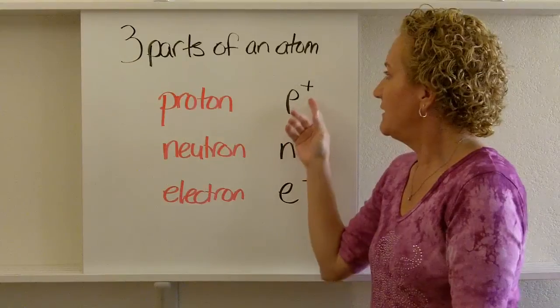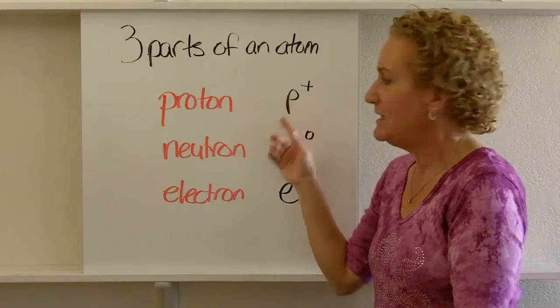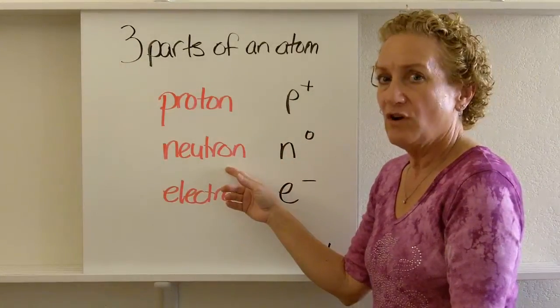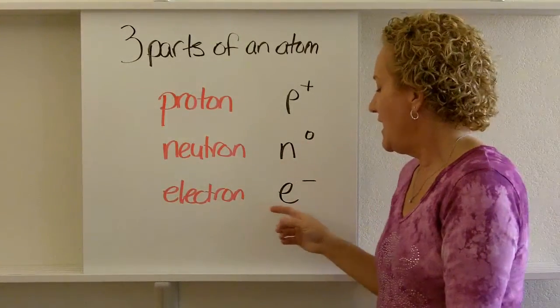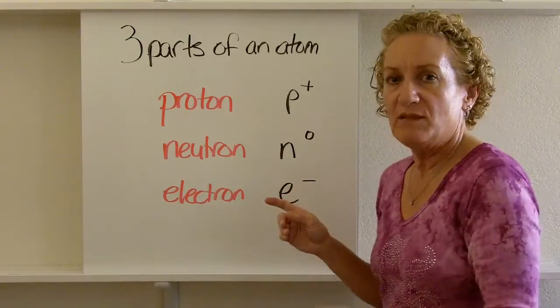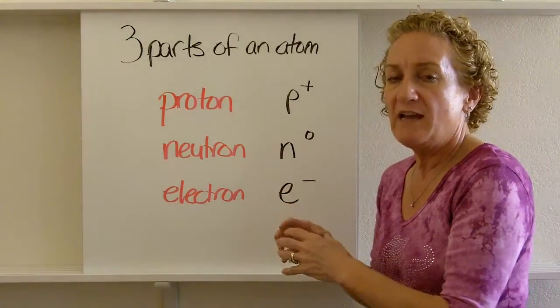Proton is a positively charged particle, which is why it has this little plus. Neutron, neutral. It's got a little zero to show that it's neutral. And electrons are E with a little minus sign because it's a negatively charged particle.